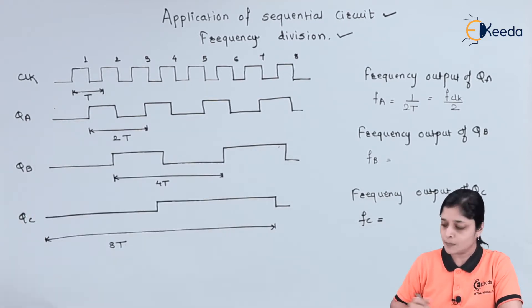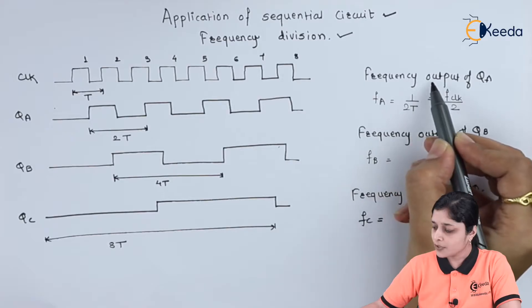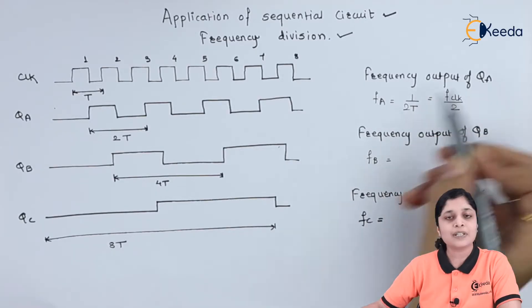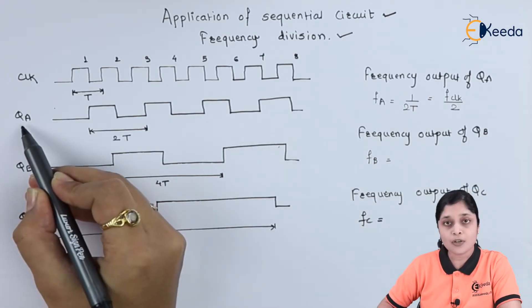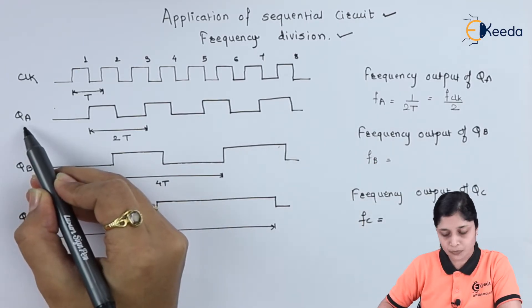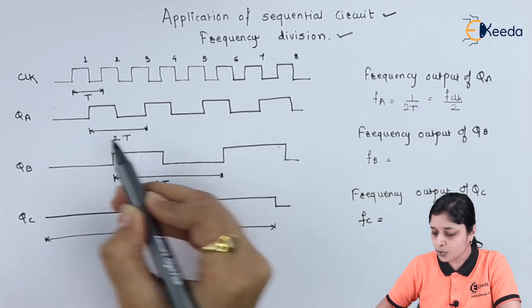So we can calculate the frequency output of QA. Frequency is the reciprocal of time, that's why we can write here frequency of output of first flip-flop, that is QA, is 1 upon 2T. Here we are getting 2T, that's why 1 upon 2T, and this will become F clock by 2.